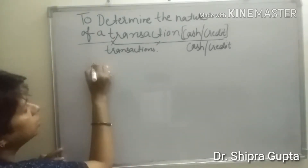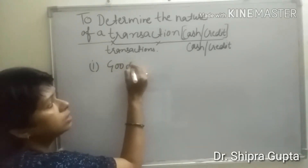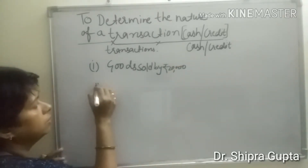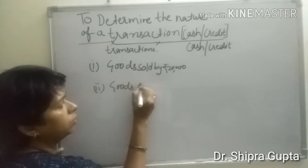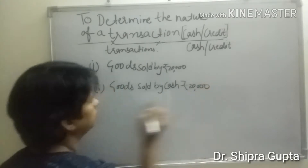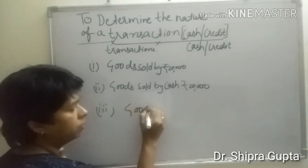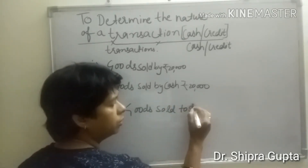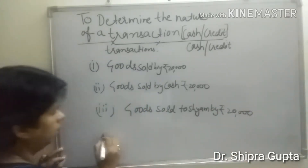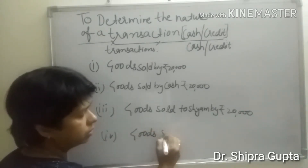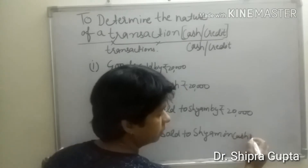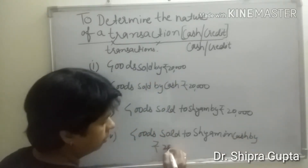For example: First, goods sold by rupees 20,000. Second, goods sold by cash, rupees 20,000. Third, goods sold to Shiam by rupees 20,000. And last, goods sold to Shiam in cash by rupees 20,000.